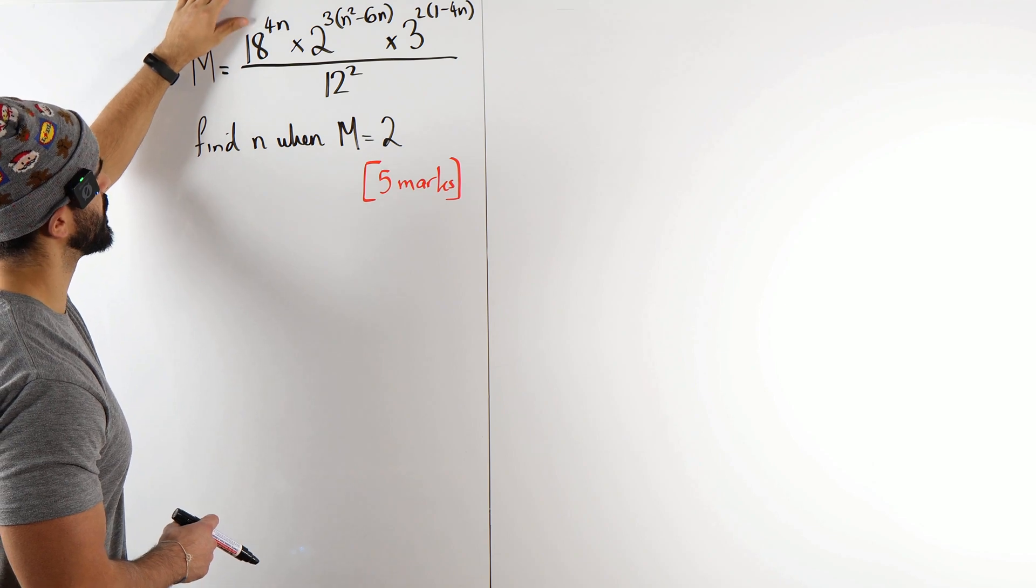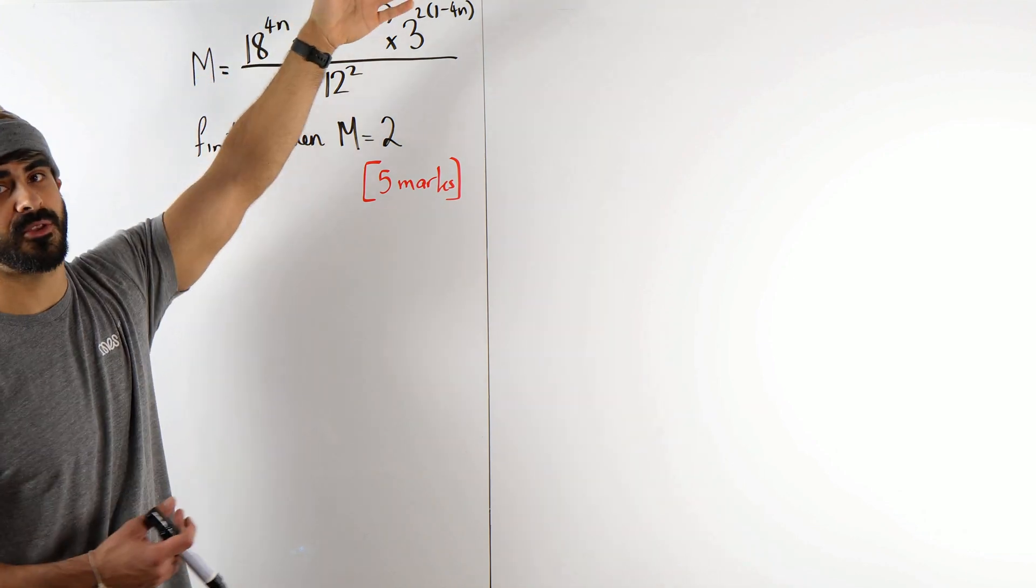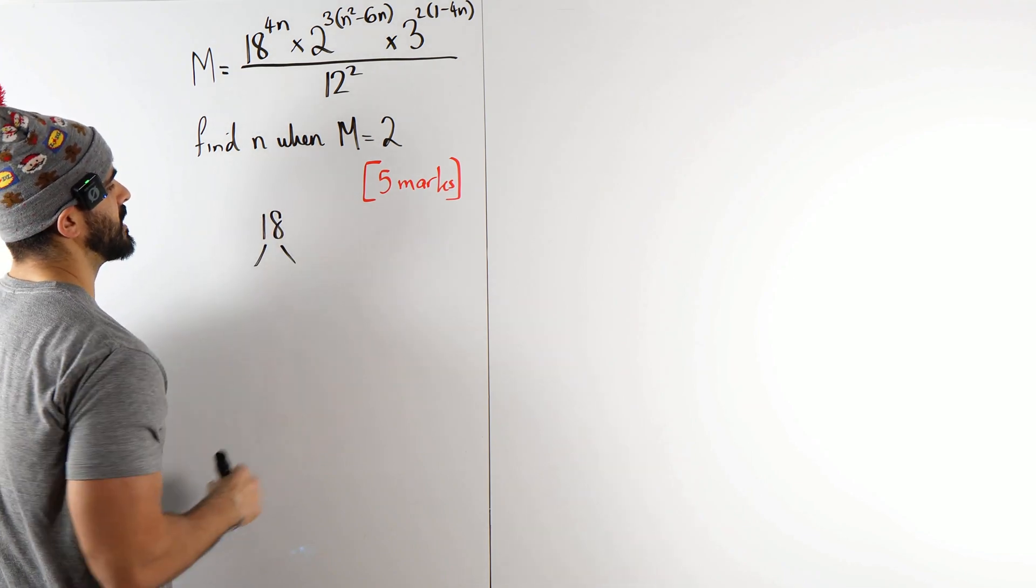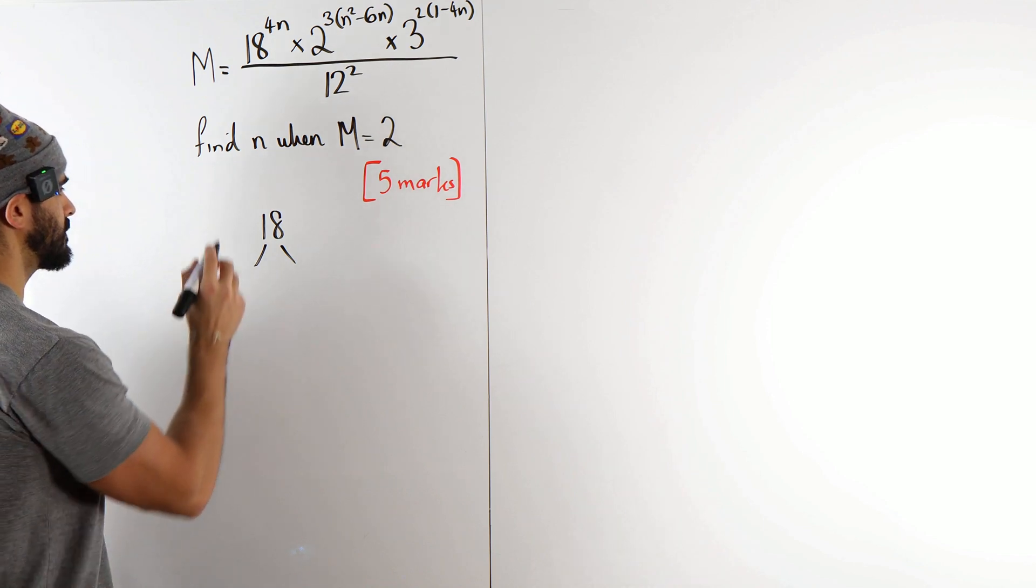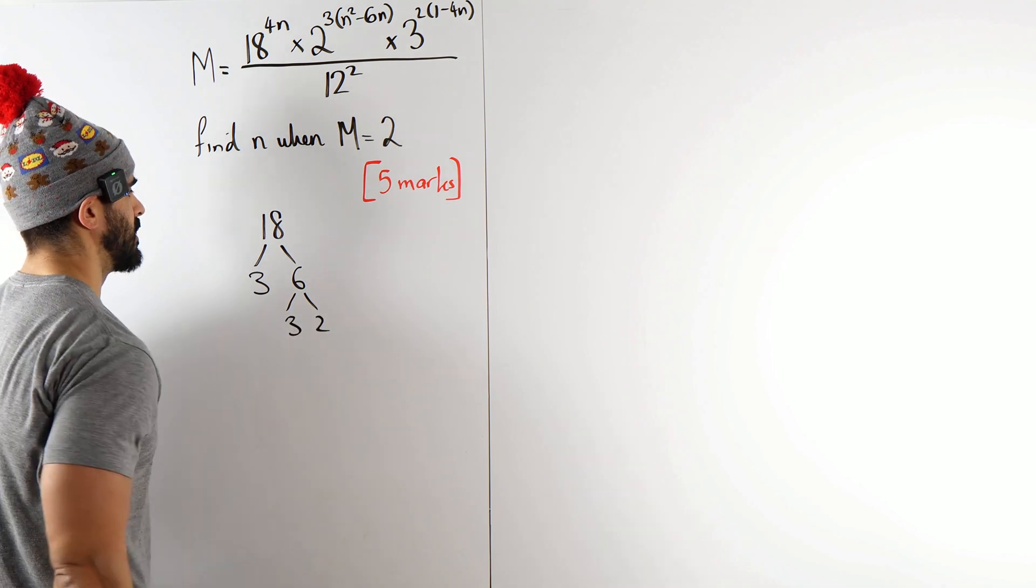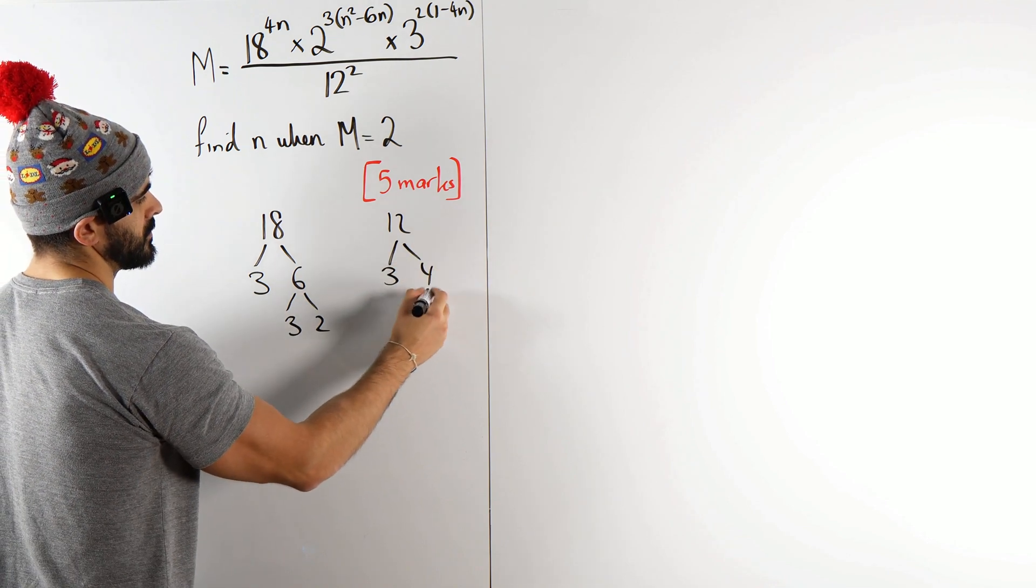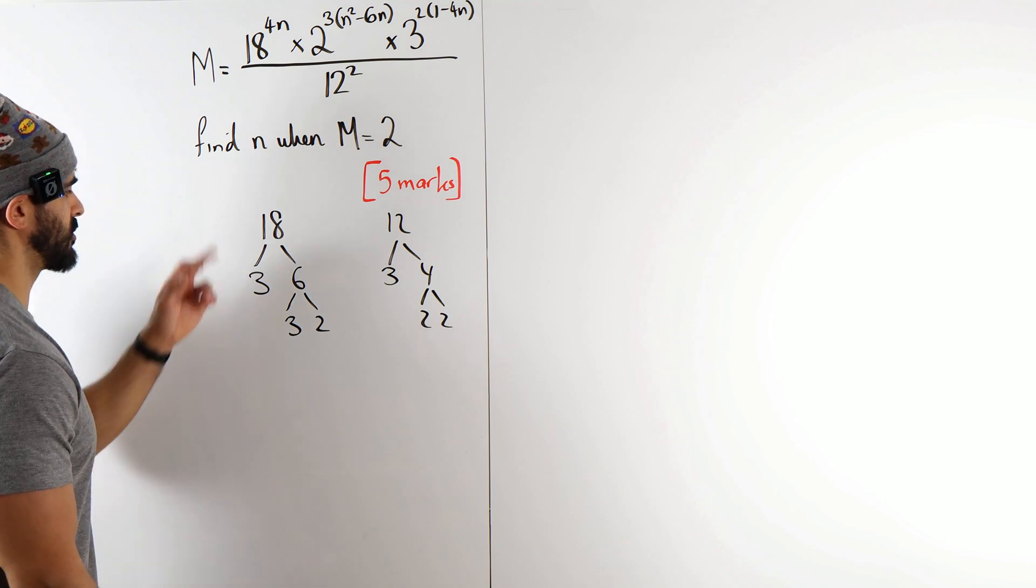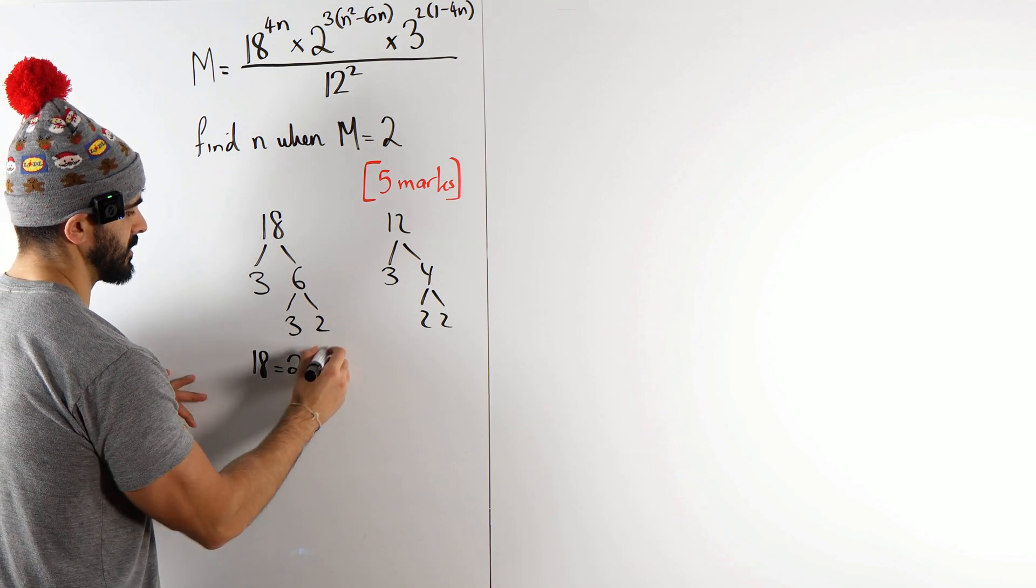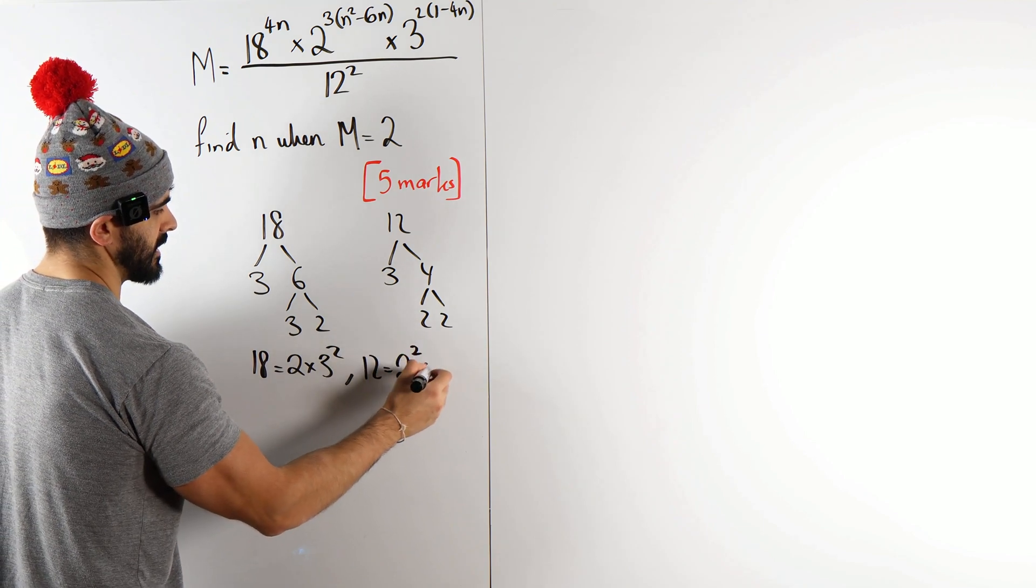So it looks like we're going to have to rewrite everything as either base 2 or 3. So 18, we need to somehow rewrite it so that the base has 2 and maybe 3. And we can do that by thinking about our prime factors. 18 is 3 times 6 and 6 is 3 times 2. Now with 12, we've got 3 and 4, 2 and 2. So 18 is 2 times 3 squared and 12 is 2 squared times 3.